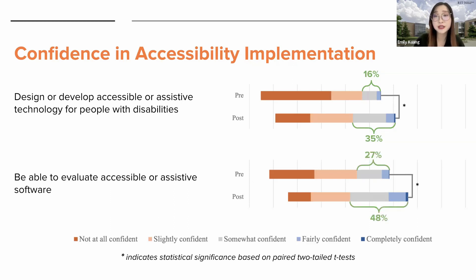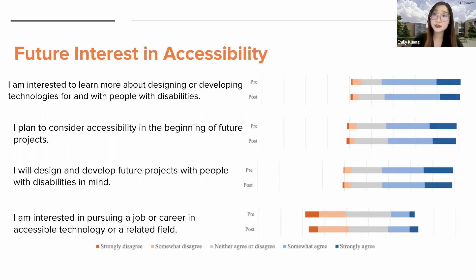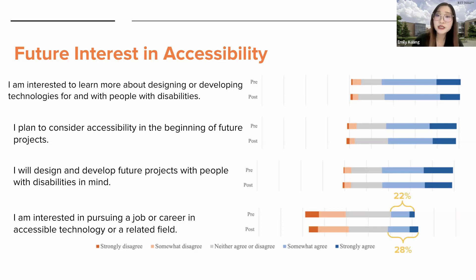Almost half of the students became somewhat confident or more about being able to evaluate accessible or assistive technology after the assignment, compared to 27% before. We did not observe statistical differences for future interest in accessibility, since responses were already generally positive prior to the assignment — almost three quarters already agreed they were interested to learn more about designing or developing accessible technologies. However, we did observe a slight increase in students interested in pursuing a job or career in accessible technology, at 28% compared to 22%.